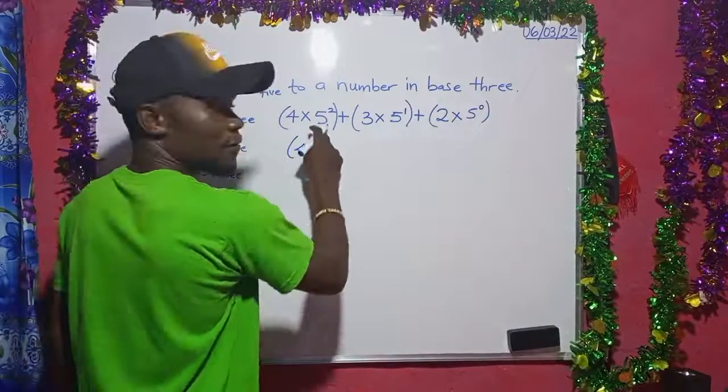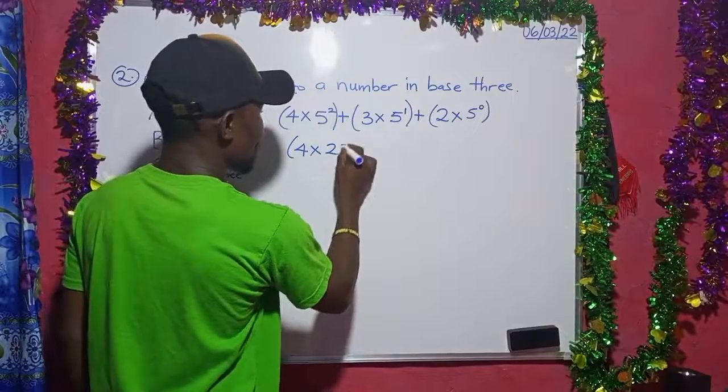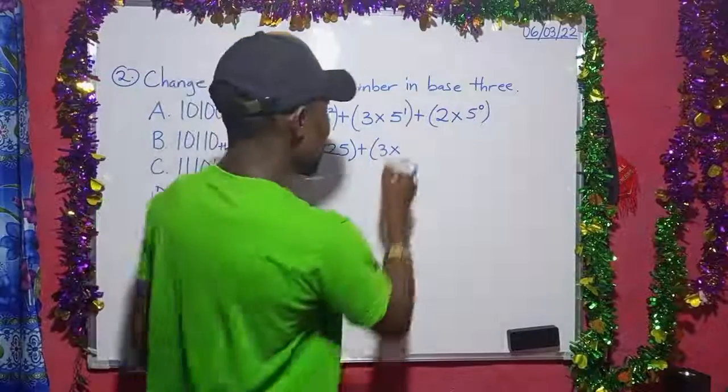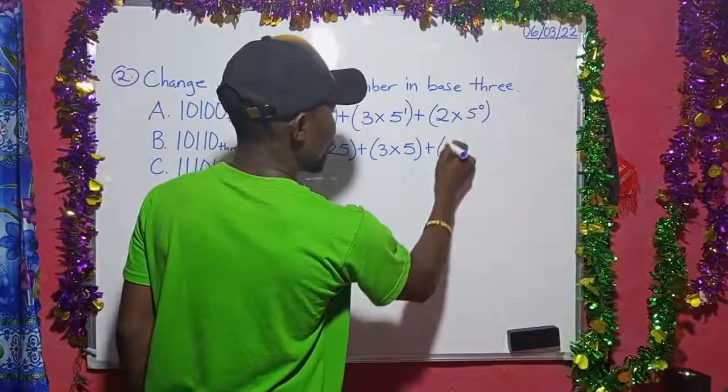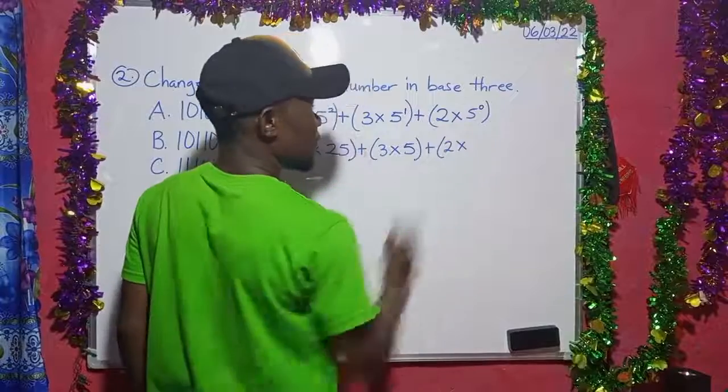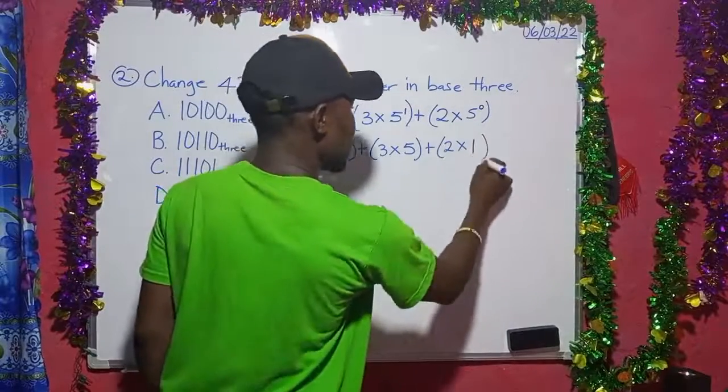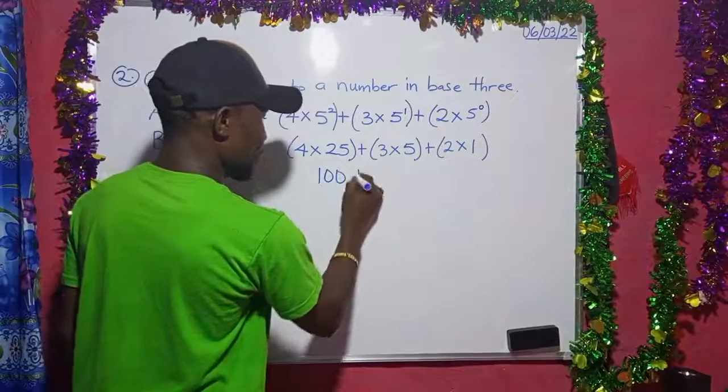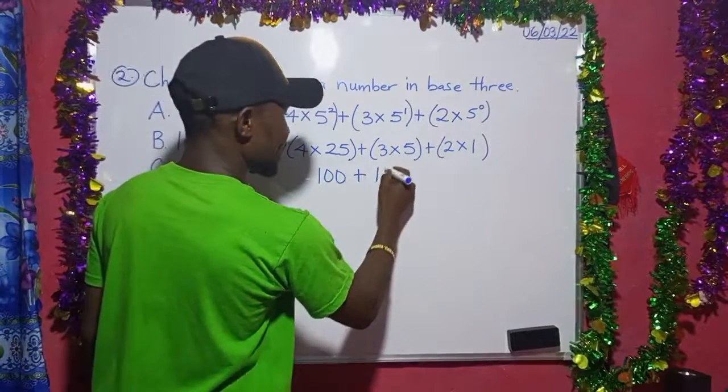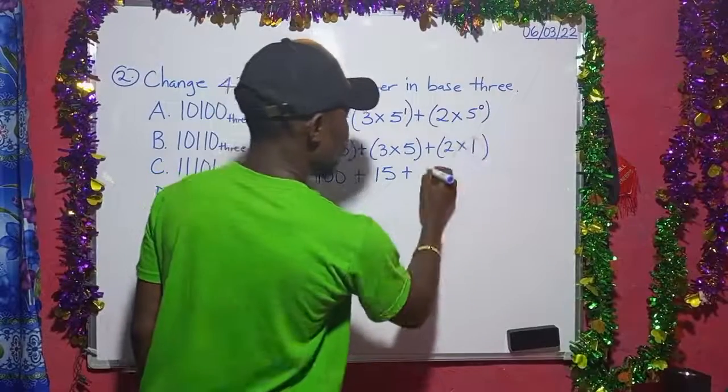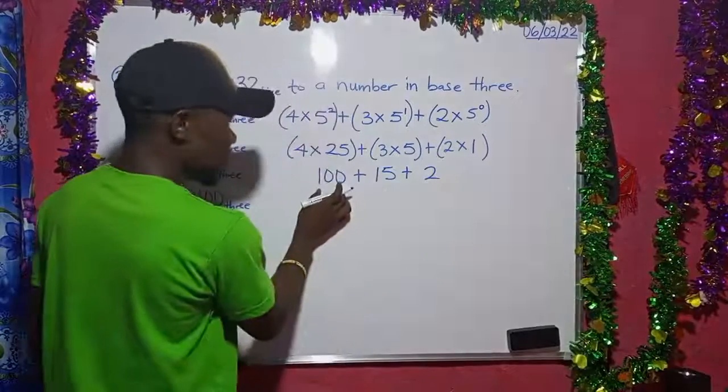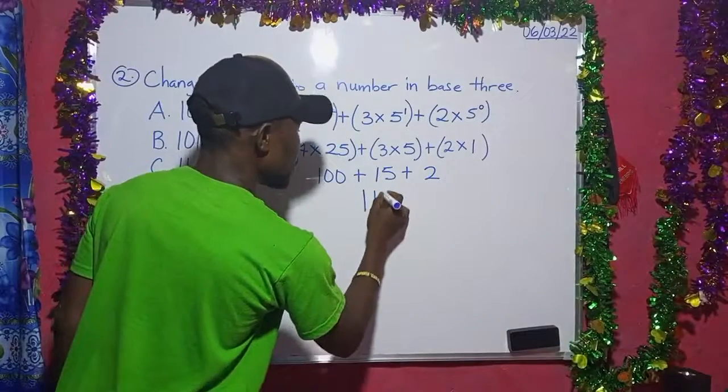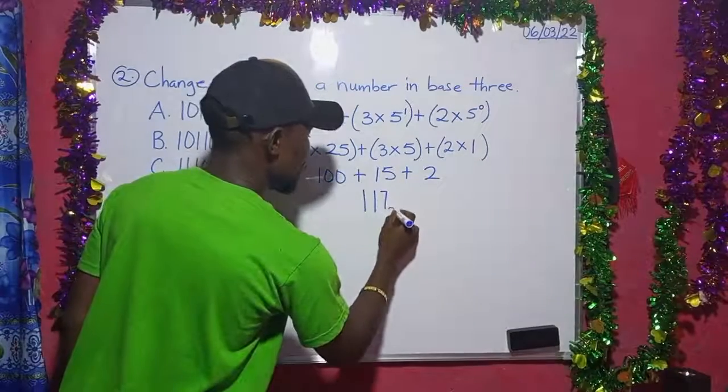So we have 4 times 5 squared is 25 plus 3 times 5 is 5. Plus 2 times 1 gives us 2. So 100 plus 15 gives us 115 plus 2 gives us 117 in base 10.